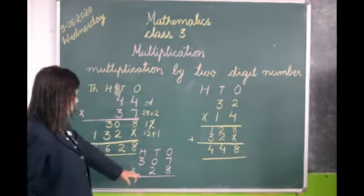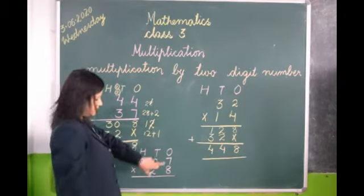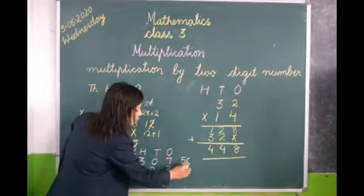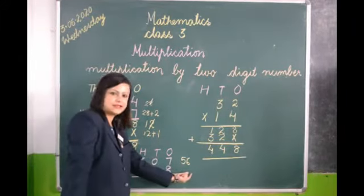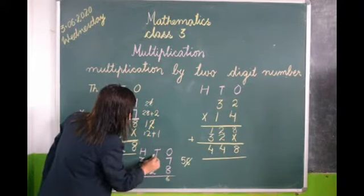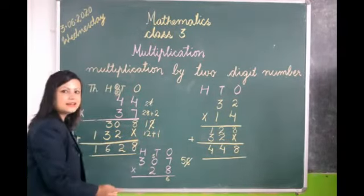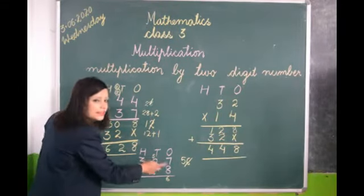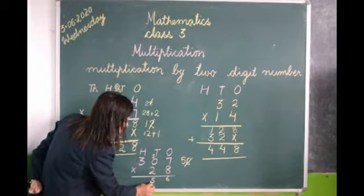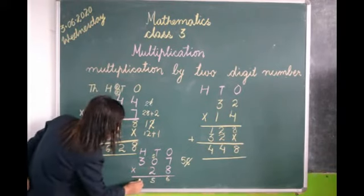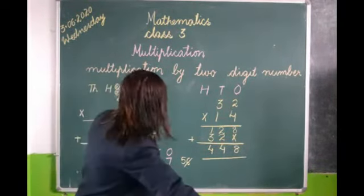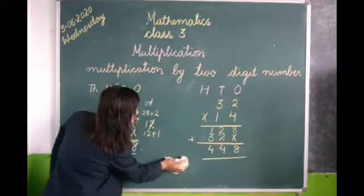Now again we do the next sum. Now we start from the first place. Now 8 sevens are how much? 56, isn't it? When there are 2 digits we cannot write directly here, we have to write at the side. So we bring the 6 down, and 5 we carry over this number. So 8 zeros are 0, so this 5 comes down. Now 8 fours are 24, so 24 we write here. I am so sorry there is no place to do here, I will do it again. I will do it here.